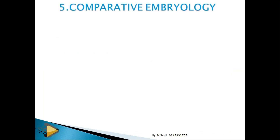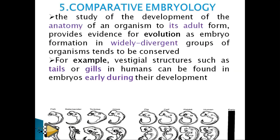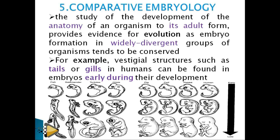Another evidence is comparative embryology — comparing the embryos of different organisms. If you look at early embryos and cover the labels, you cannot distinguish a human embryo from a rabbit, cow, or pig. They look almost the same, suggesting a common ancestor.